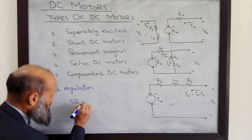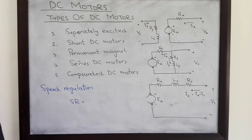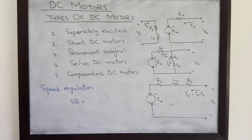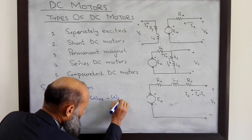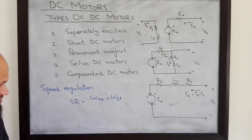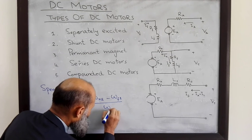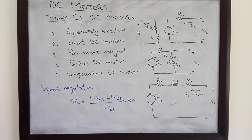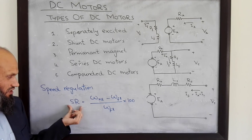Speed regulation for DC motors is defined as the no-load speed of the motor minus the speed at rated load, divided by the rated load speed, multiplied by 100 to get percent speed regulation. Speed regulation can be either positive or negative.